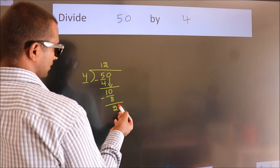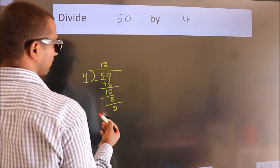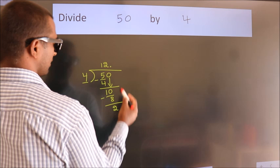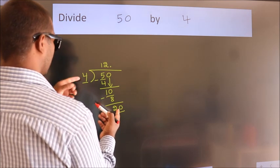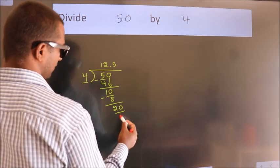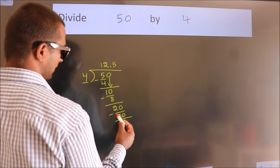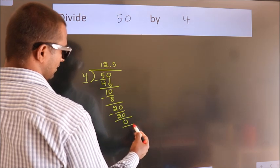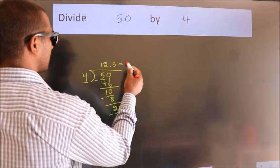After this, no more numbers to bring down. So what we do is, we put a dot and take 0. So 20. When do we get 20 in the 4 table? 4 times 5 is 20. Now we subtract. We get 0. We got remainder 0. So this is our quotient.